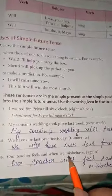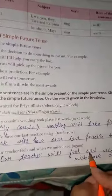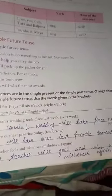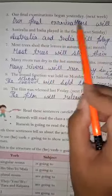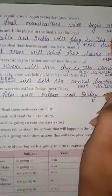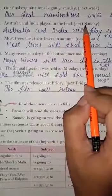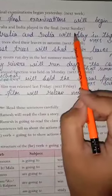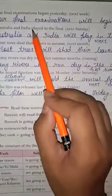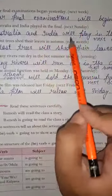Fourth: 'Our teacher feels sad when we misbehave' — becomes: 'Our teacher will feel sad when we misbehave again.' Fifth: 'Our final examinations begin yesterday' — using 'next week' — becomes: 'Our final examinations will begin next week.' Sixth: 'Australia and India played in the final' — using 'next Sunday' — becomes: 'Australia and India will play in the final next Sunday.' Remember to use the time expression at the end and use the first form of the verb with 'will'.